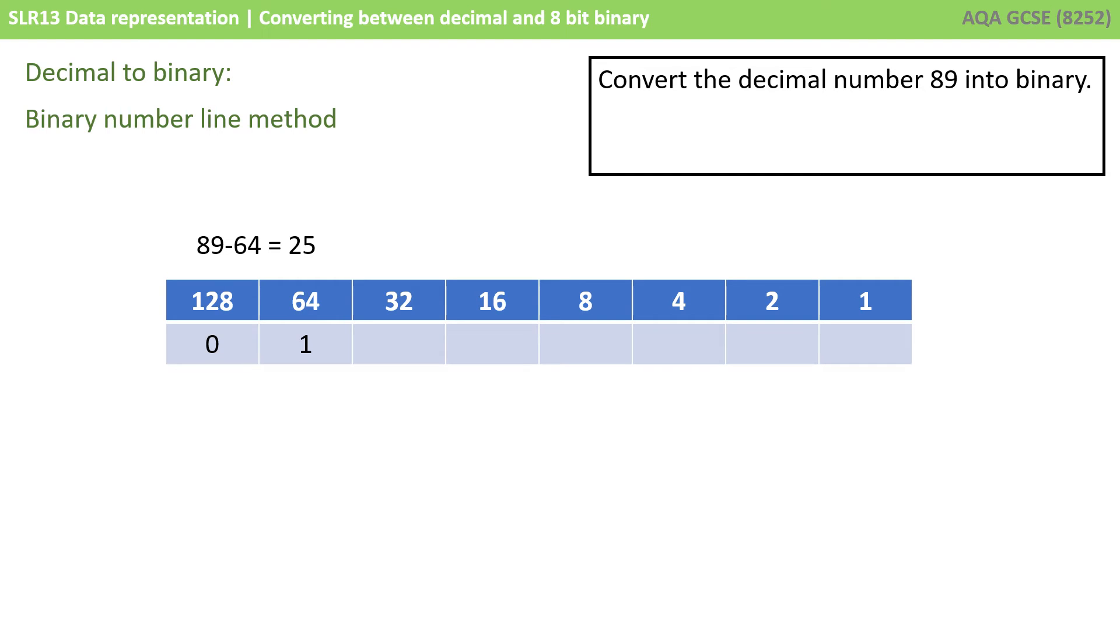The next column has a weighting of 64. So we ask ourselves, how many whole times does 64 fit into 89? Well, the answer is it fits in 1 whole time. What we have left is 25. So now we move to the next column.